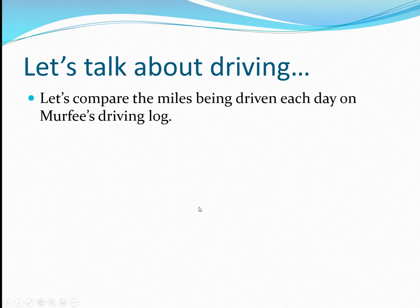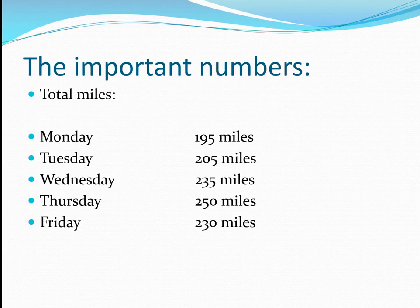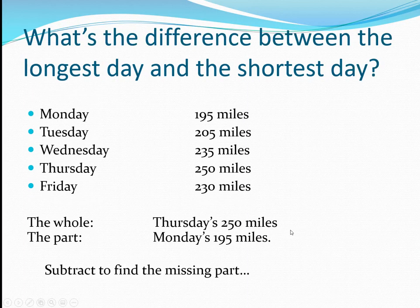Let's talk about driving. Let's compare the miles driven each day on Murphy's driving log. Monday: 195 miles. Tuesday: 205 miles. Wednesday: 235 miles. Thursday: 250 miles. Friday: 230 miles. All of them are miles. What's the difference between the longest and the shortest day?